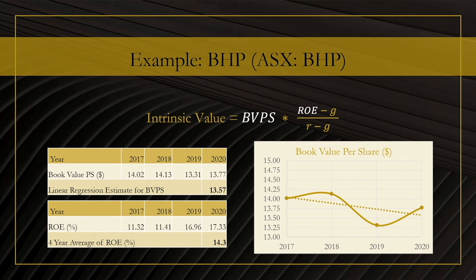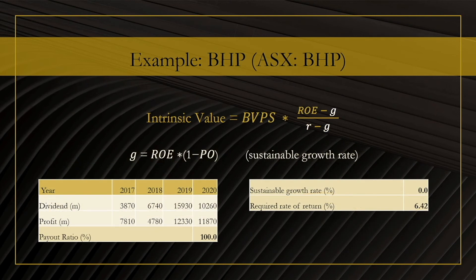Let us now look at return on equity. We are looking at the last four years, and we will keep things simple and just take the average over the last four years. That gives 14.3%. Now, let's look at estimating PO, or payout ratio. We take all the dividends from the last four years and divide by the sum of all the earnings over the last four years. This turns out to be 100.0%, so the company has paid out all of its earnings over the last four years. While 100% is very high, mining companies typically give out quite a bit of their earnings to their shareholders.